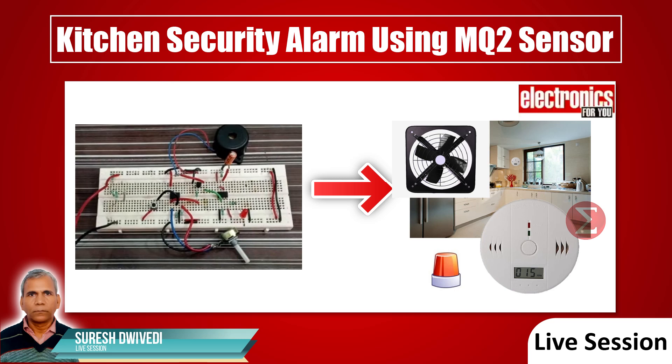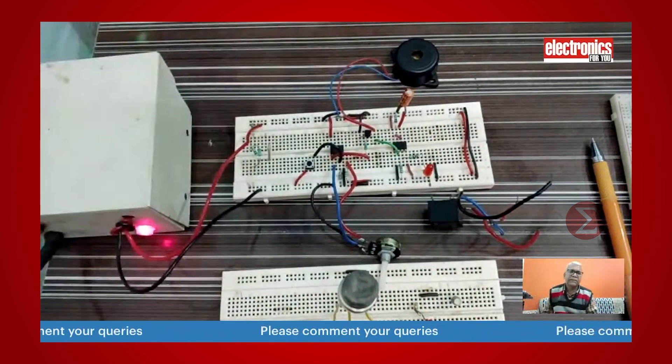Hello friends, today's project is a kitchen security alarm using MQ2 sensor. Using this simple circuit, you can sense LPG gas leakage. Whenever any gas leakage is there, you will hear a buzzer sound and the exhaust fan in the kitchen will turn on automatically.